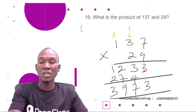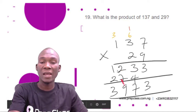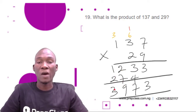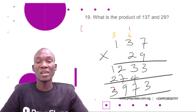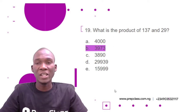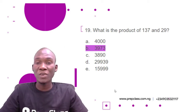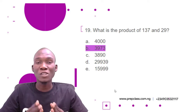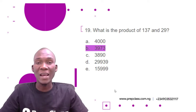After the multiplication we add the two rows. Bringing down: 3, then 3 plus 4 is 7, then 2 plus 7 is 9, then 1 plus 2 is 3. So our answer is 3,973. The product of 137 and 29 is 3,973. The correct option is B, 3,973. Product means multiplication, and you multiply the same way you would with smaller numbers.